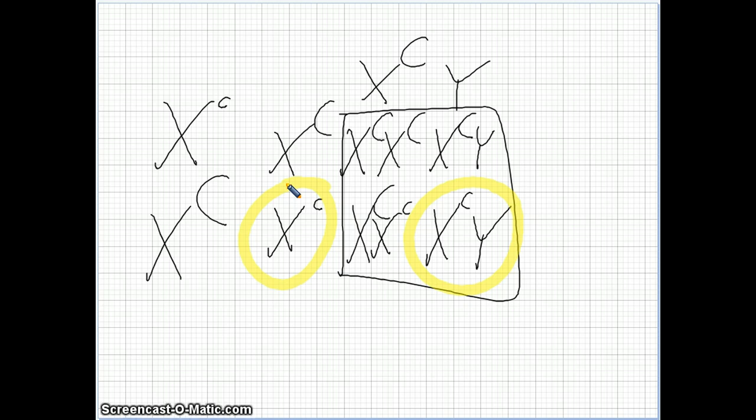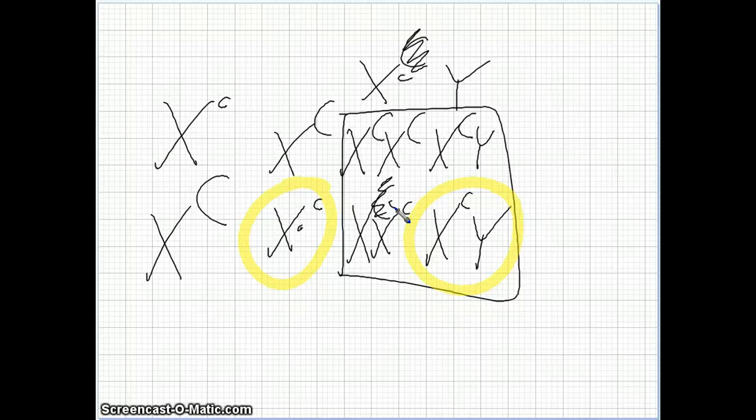Now mothers typically are carriers, guys will be showing the trait. So in order to have a color-blind girl, mom has to at least be a carrier, and dad would have to be color-blind to make a girl down here be color-blind as well. So dad has to be color-blind and mom has to at least be a carrier to make a color-blind girl. So that's just a quick run through inheritance of color-blindness.